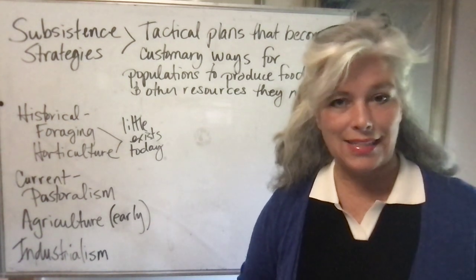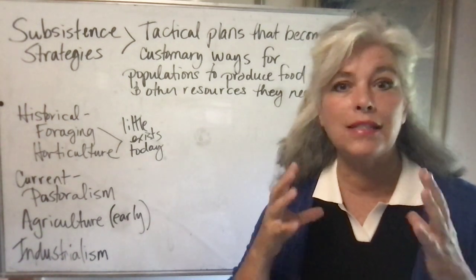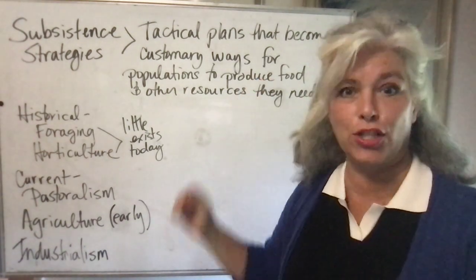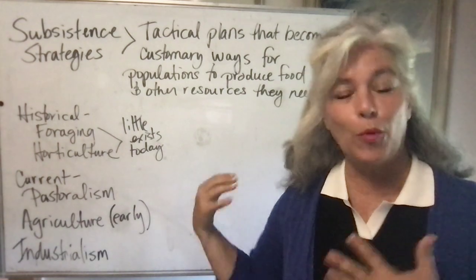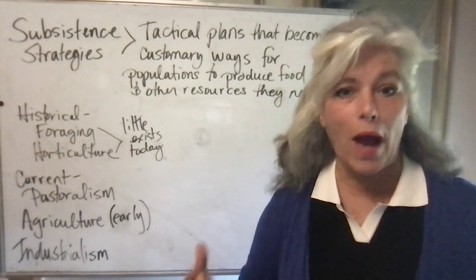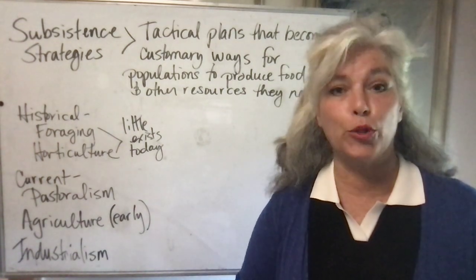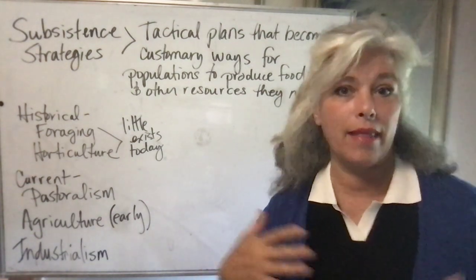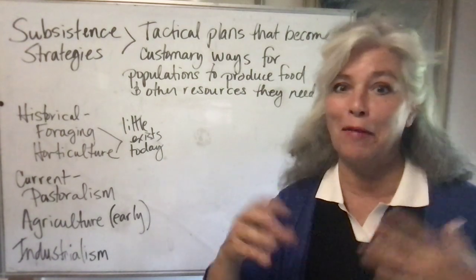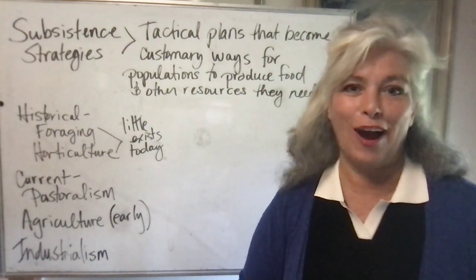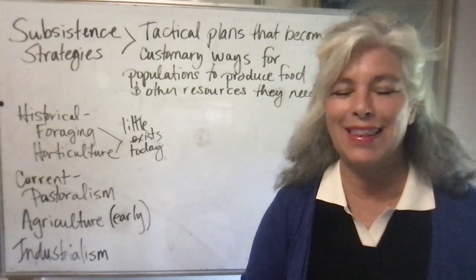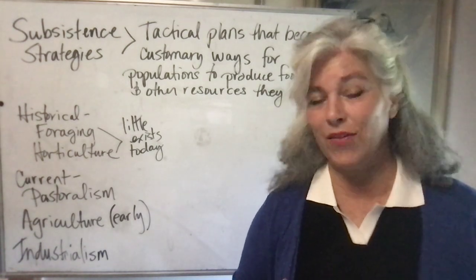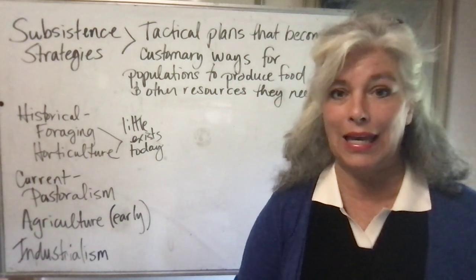Hi students! In this lesson we are going to look at subsistence strategies. I have a definition on the board behind me. This is a way that societies, groups of people, populations of people get resources. How do they get the resources? How do they use what's available in their environment? How do they innovate and figure out ways to manipulate their environment in order to have enough food to survive and to support the numbers of people in a population?